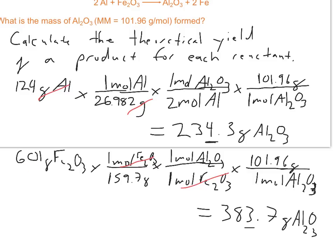Now, the limiting reagent is the one that produces the least amount of product. It's important to write down the limiting reagent or reactant.